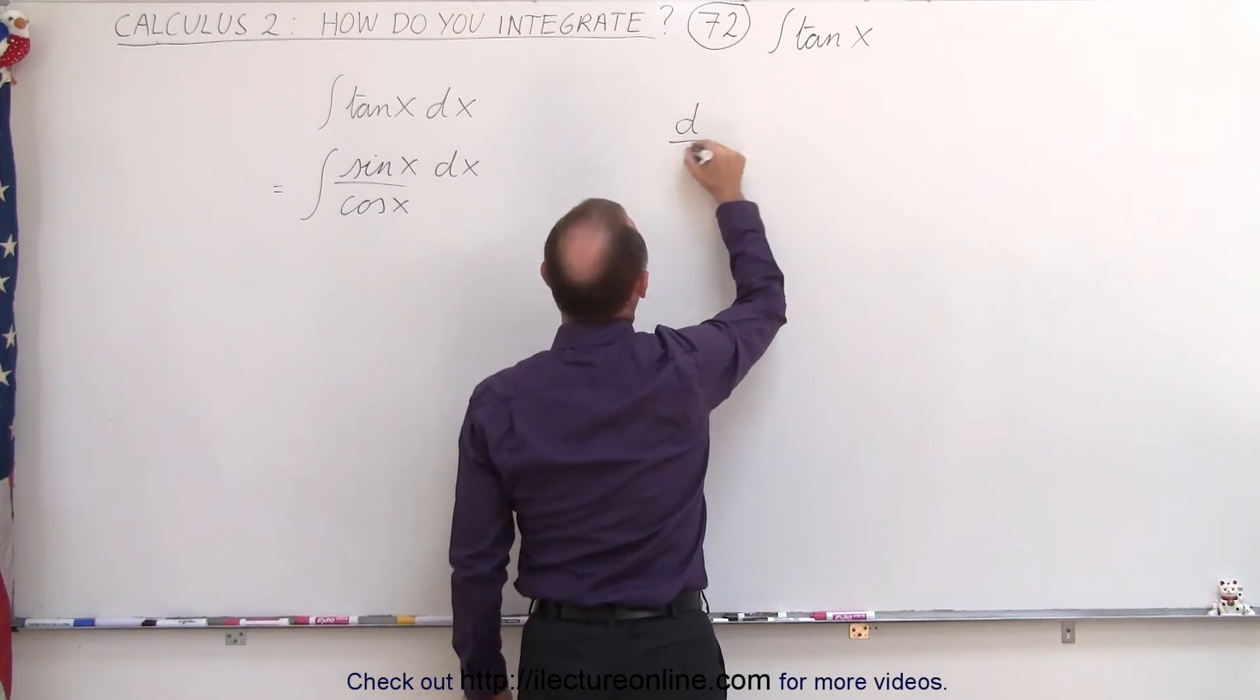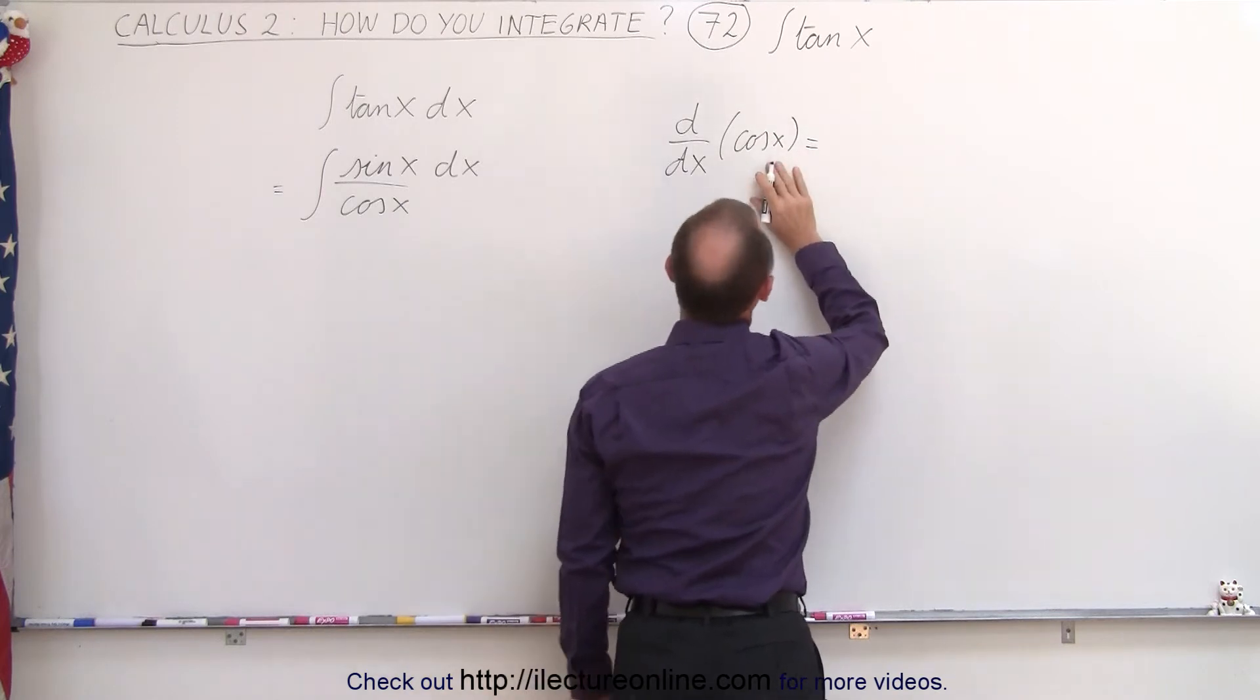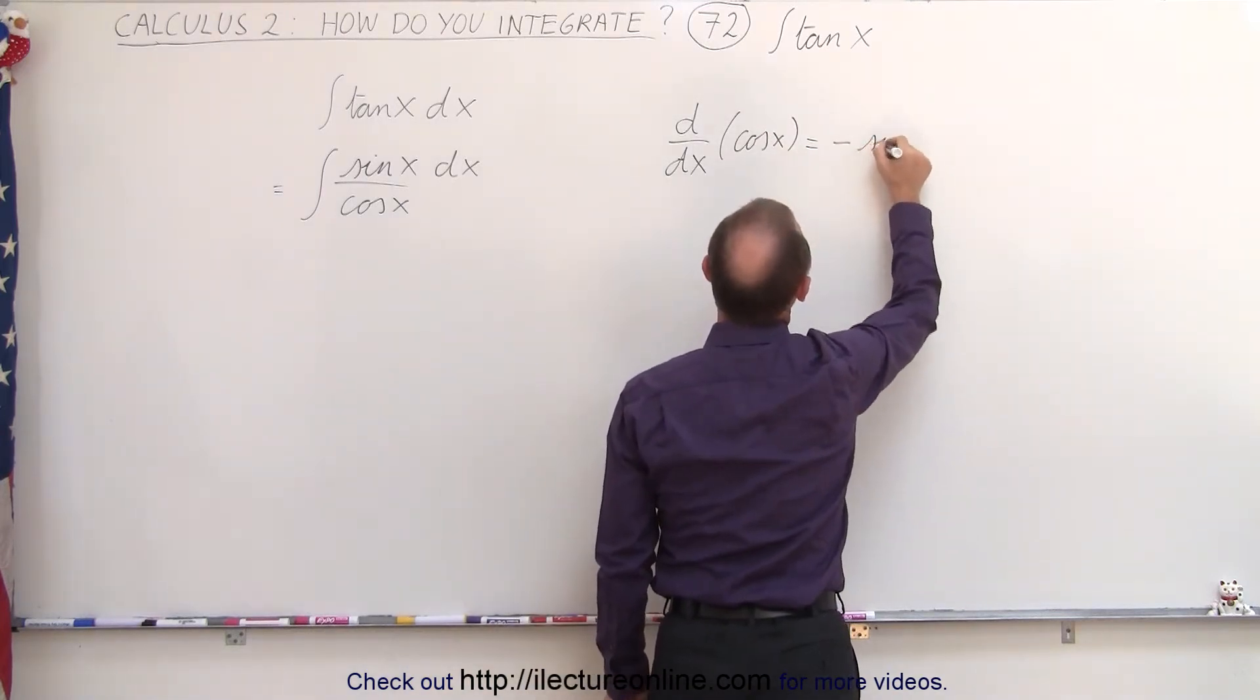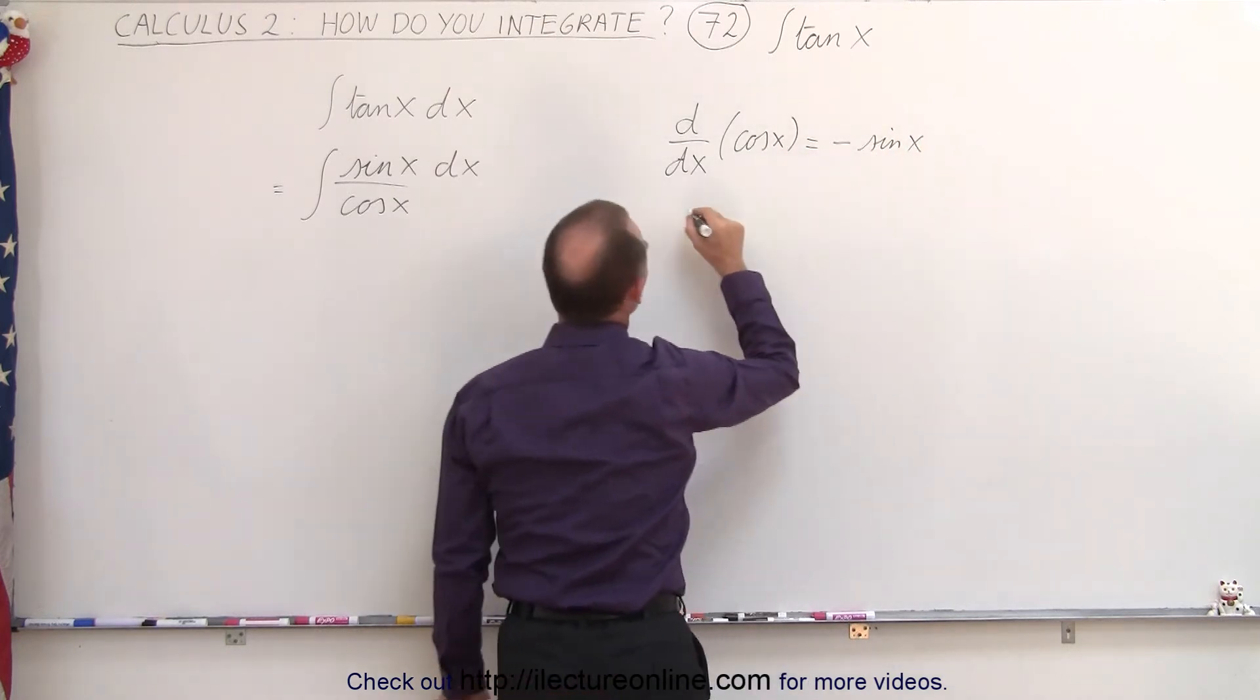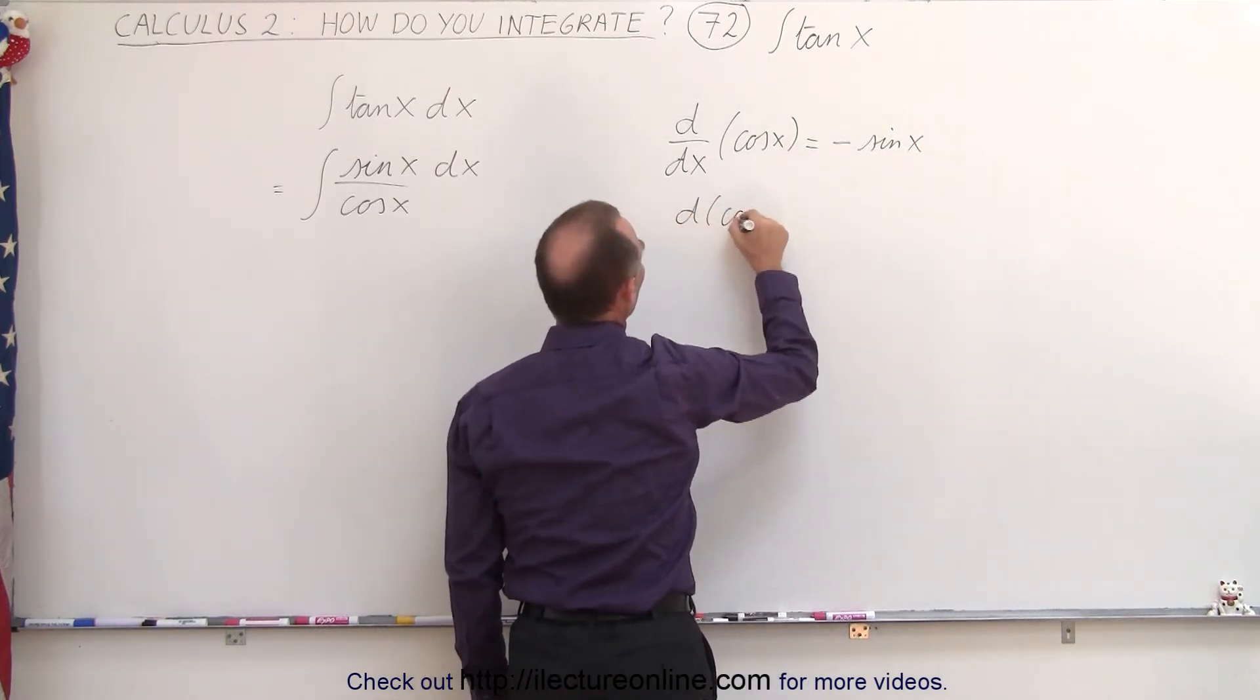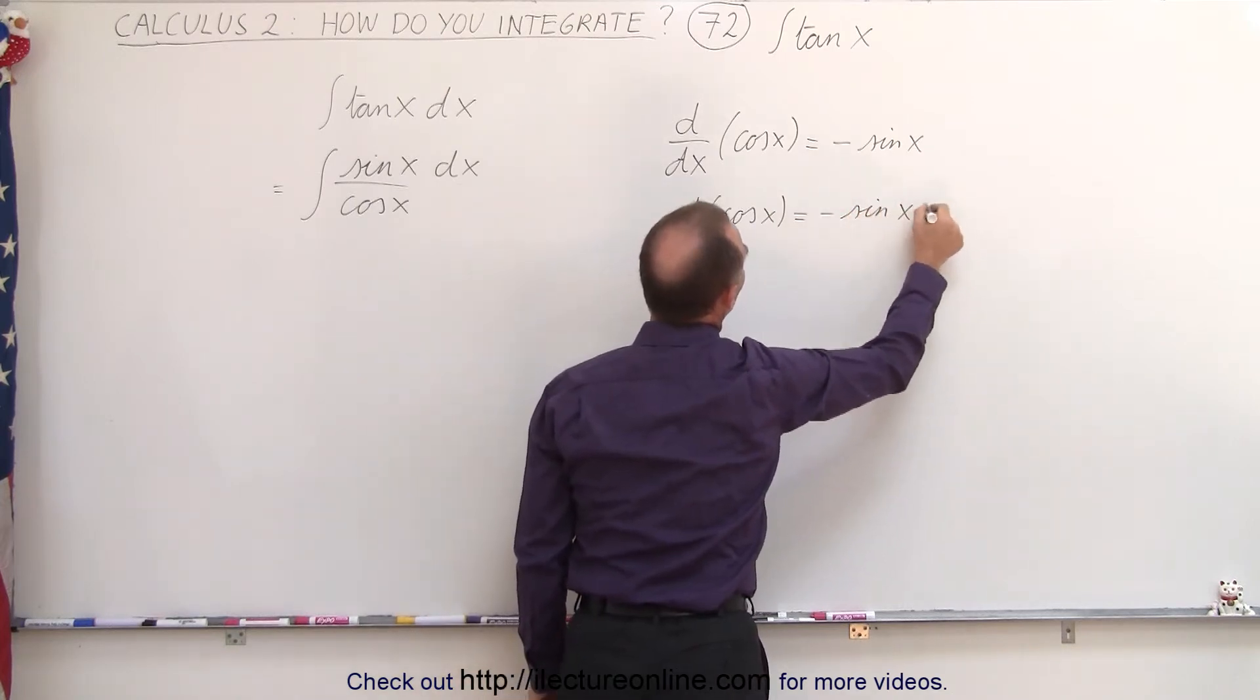if we take the d dx of the cosine of x, that is equal to the minus sine of x, and then if we place the dx over here, we can see that the differential of the cosine of x is equal to the negative sine of x dx.